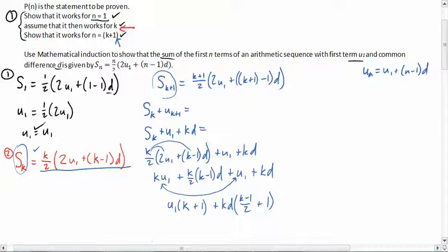So what I'm going to do now is I'm going to go ahead and do the stuff in the parentheses and simplify those. And so I'm going to bring it up here. So I'm going to go u1 times k plus 1, plus kd, and 1 is the same thing as 2 over 2. So I'm going to add those two together. So I'm going to have k minus 1 plus 2, which is the same thing as k plus 1. So I'm going to add that all over 2, of course.